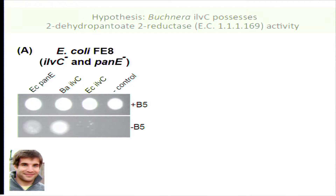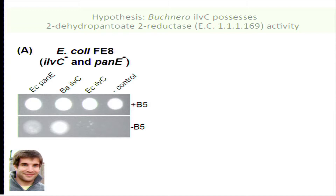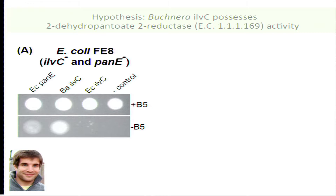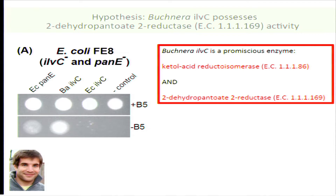Here are the results — with and without B5 supplementation — for E. coli PAN-E complementation, Bucknera ILVC, E. coli ILVC, and a negative control. You can see that Bucknera ILVC rescues these mutants, completing the synthesis of pantoate. Tantalisingly, Bucknera ILVC seems to do a much better job than E. coli ILVC, which is known to have very low 2-dehydroxopantoate 2-reductase activity. So Bucknera ILVC is a promiscuous enzyme that mediates both reactions.